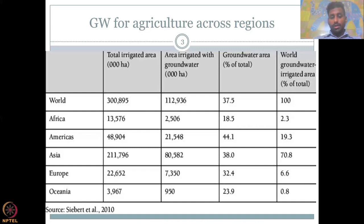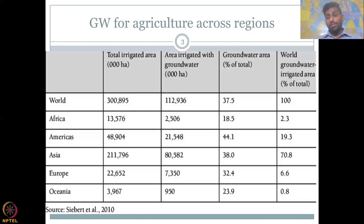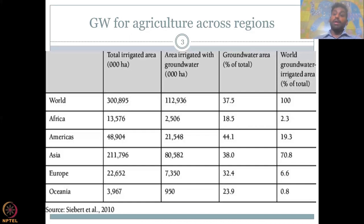In Europe, irrigation is very small — almost that of Africa — meaning not much irrigation happens, very less agricultural productivity. Of that, even less is for groundwater irrigation: only 32.4%, much lower than the world average, and only about 6–7% of the world's groundwater-irrigated area. The pumps and technologies used in Europe may not be applicable for Asian countries. Yes, there are many technologies available in Europe and Western countries, but the system here is totally different — the volumes extracted are much, much higher. We need better engineering and natural solutions to manage groundwater.